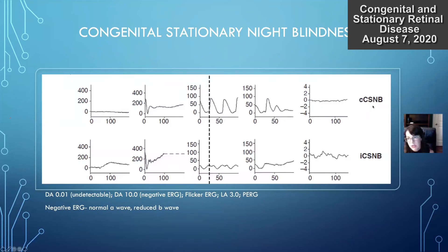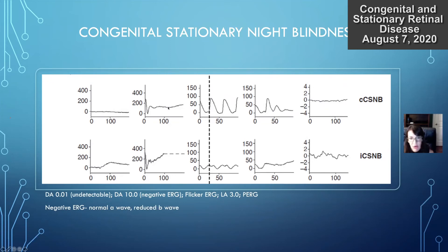The complete CSNB form shows a completely flat dark-adapted ERG at low intensity. At higher light intensity you'll see the A wave — photoreceptor function is normal — but there's a disruption in the synapse between photoreceptors and bipolar cells, giving you this negative ERG because the B wave is gone. This indicates a problem going from outer retina to inner retina. You'll also see this negative ERG in incomplete CSNB — the B wave is absent but you have a pretty good A wave.